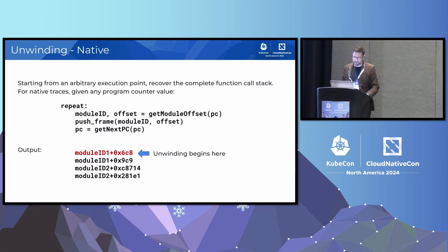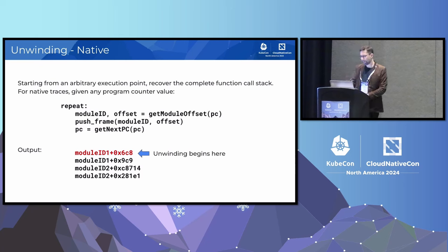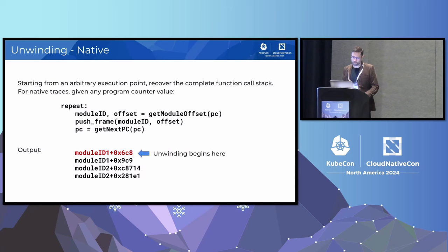The native unwinder is an eBPF program running inside the kernel — we can think of it as a very simple virtual machine. In pseudocode: we start by reading the register state from the interrupted process, extract the current frame and append it to the current stack trace, then load and execute an unwinding instruction based on the current program counter value and PID. The instruction tells us how to unwind the next frame. The output is a stack trace composed of frames where each frame is a module ID and an offset within that module.